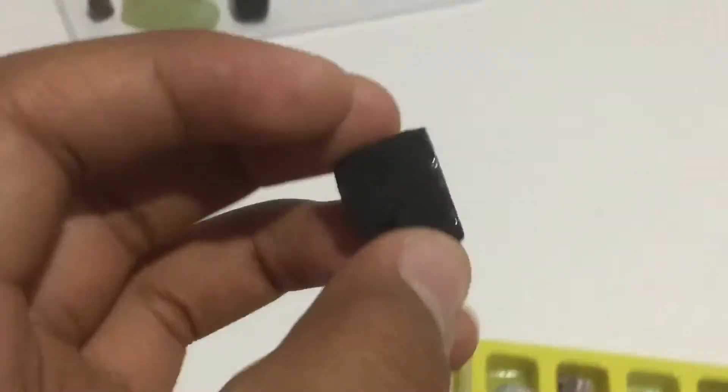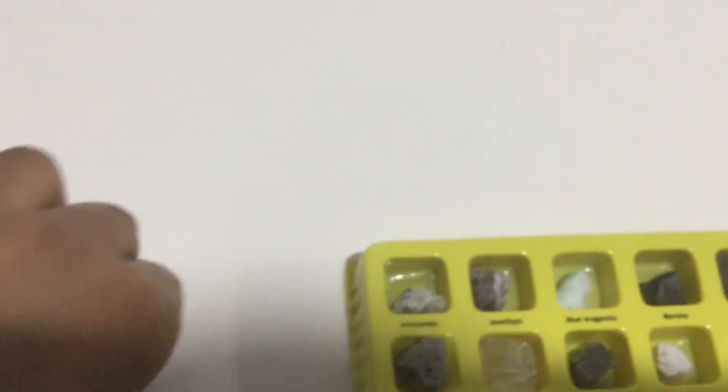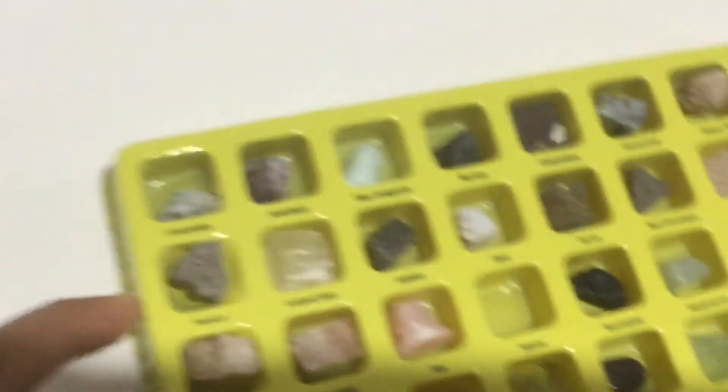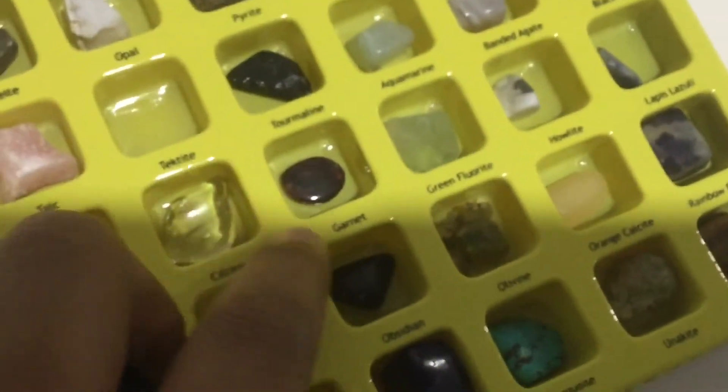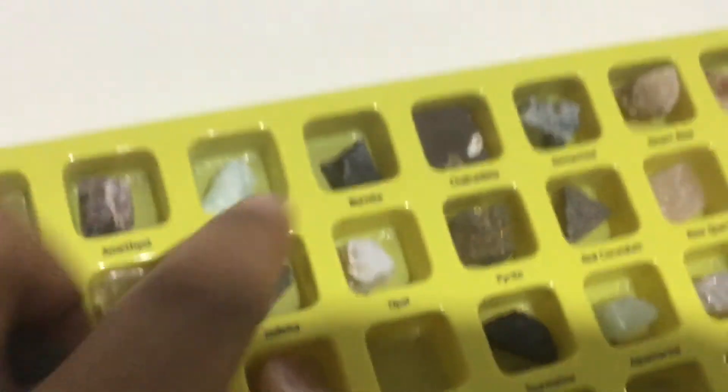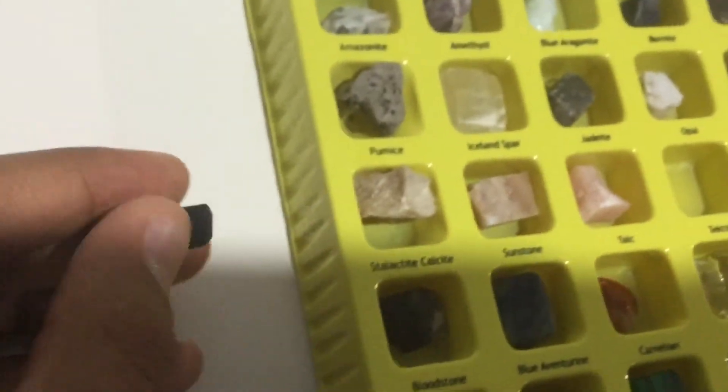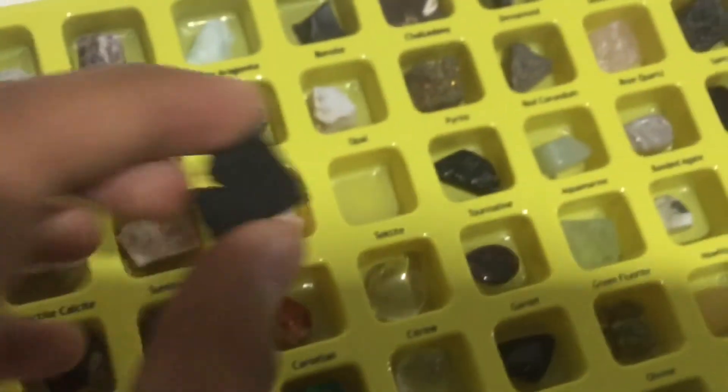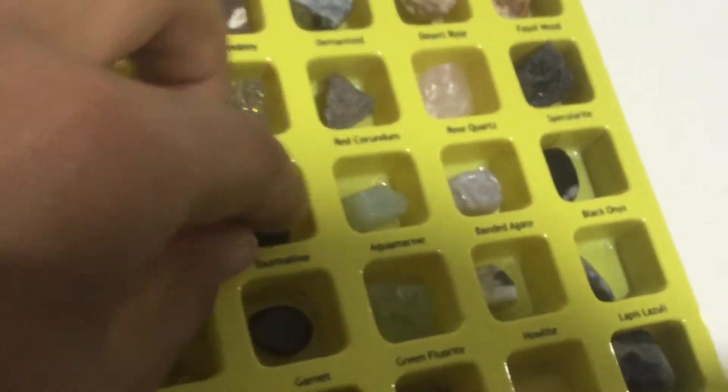This one is tektite. When a meteorite falls down to the ground and the actual rocks from Earth, like just pretend chalcedony is there, they just go out into space and back to Earth, and they become this type of mineral called tektite. It's actually really glittery. It's really cool.